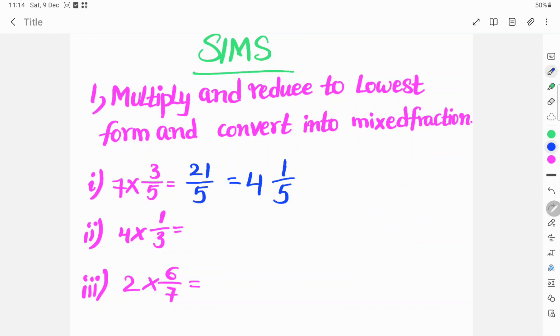Another sum. 4 into 1 by 3 is equal to 4 by 3. Denominator is 3. Convert into mixed fraction. 3 into 4. 4 minus 3 is equal to 1. So 1 and 1 by 3.